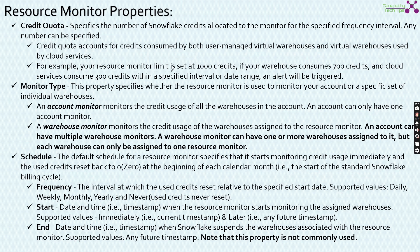For example, your Resource Monitor limit is set to 1000 credits. If your warehouse consumes 700 credits and the cloud services layer consumes 300 credits within the specified interval or date range, then the alert will be triggered. This is the credit quota property.